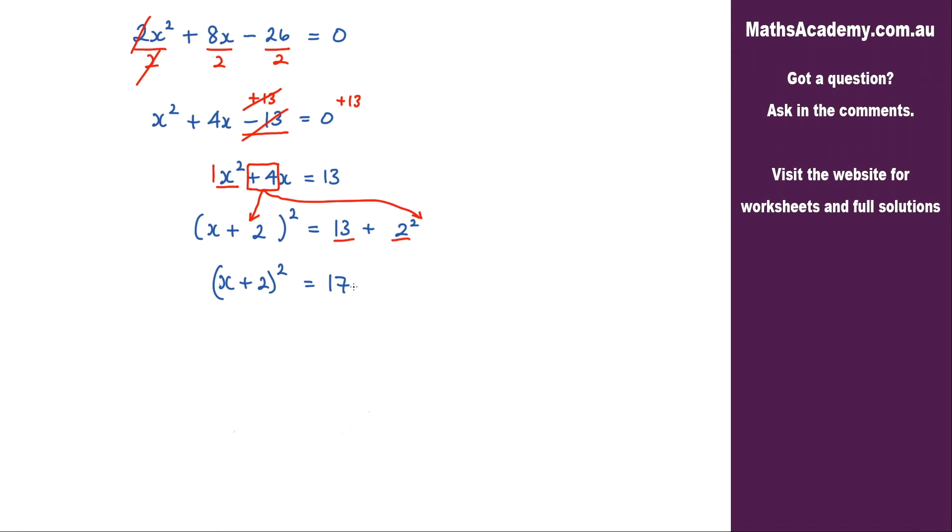The next thing I need to do is to eliminate this squared here, and I do that by taking the square root. And if I take the square root to the left, I must take the square root of the right. And this is where you need to be careful. You must remember that it will be plus and minus. When you take the square root of 17, you'll get a positive and a negative answer. Now on the left hand side, the square root and the squared will cancel. So what I'll have is x + 2 = ±√17.